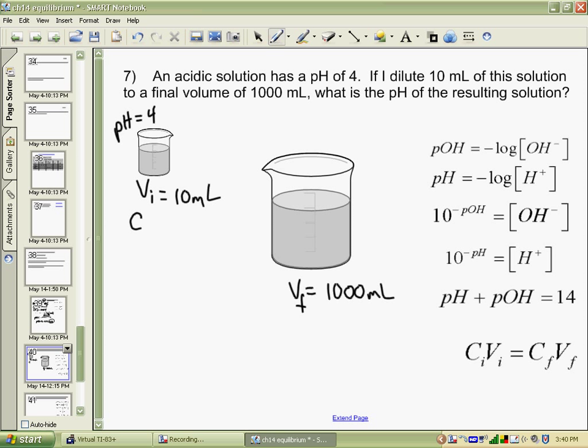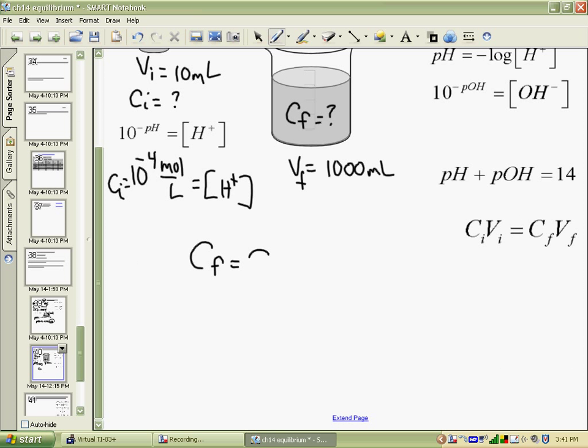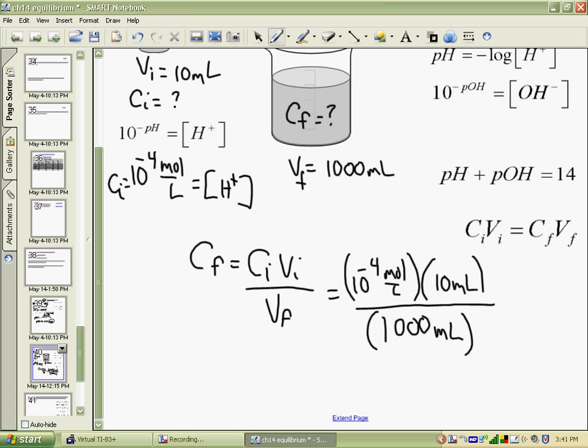My initial concentration I'll have to figure out. Our hydrogen ion concentration can be figured out by taking 10 to the minus pH. So my 10 to the minus 4 moles per liter is the H+ concentration. And that will be CI. Now we can determine what the concentration is in here. So CF will be CI VI divide by VF. My initial concentration was 10 to the minus 4 moles per liter. My initial volume was 10 mils. And final volume is 1,000 mils. Now we don't get hung up on the fact that here I have liters and here I have milliliters. That's not a big deal because the mils cancel.